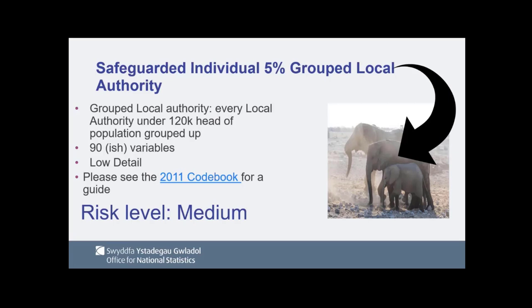We've got the individual 5% at grouped local authority level. Grouped local authority is a special geography that groups up every local authority under 120,000 head of population. We did this for 2011 and the 2011 codebook is available as a guide. It is slightly different this time around, partly due to population increases and partly due to boundary changes. Where possible, we try to make it the same as 2011 for comparative purposes. We're also hoping to get the geography available on the GeoPortal to make it easier to use.